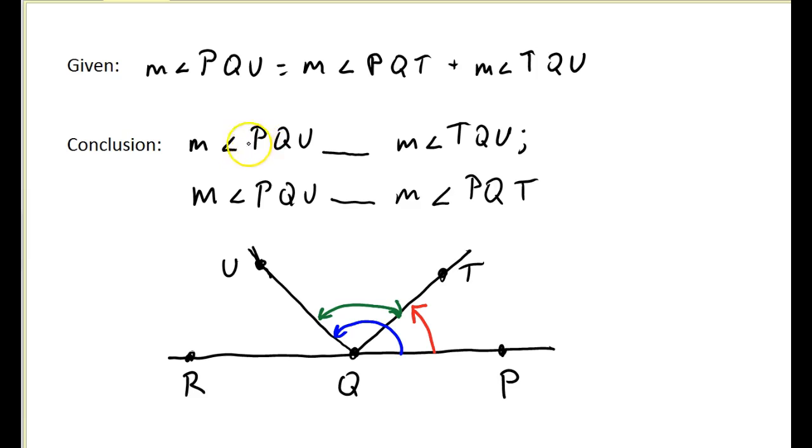Well, is PQU greater than, less than, or equal to the measure of angle TQU? Since we have to add TQU and PQT to get PQU, that means PQU is going to be greater than angle TQU. How about the measure of angle PQU compared to angle PQT? Once again, it will be greater than, because we have to add these two to equal this big angle right here.